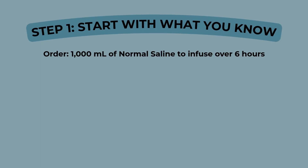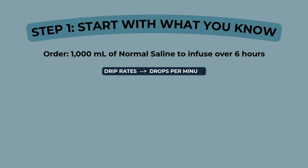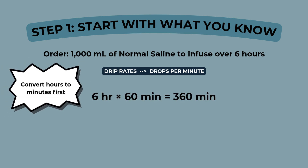Let's start with what we know. The order is for a thousand milliliters of normal saline to infuse over six hours. But remember, drip rates are always calculated in drops per minute. So before we do anything else, we convert the time. Six hours times 60 minutes equals 360 minutes. Now we've got the correct unit for our setup: one thousand milliliters over 360 minutes. That's our foundation — everything builds from here.